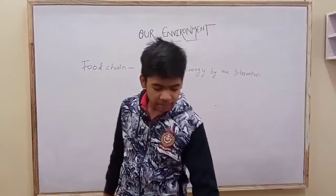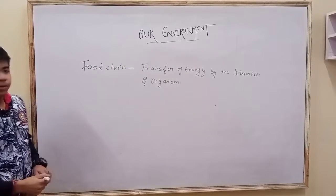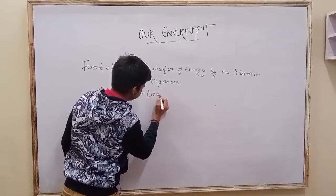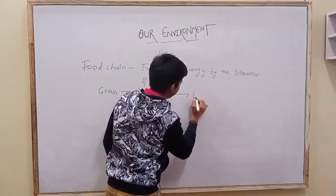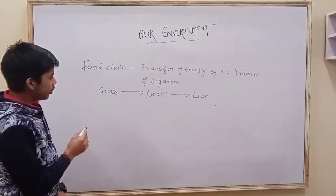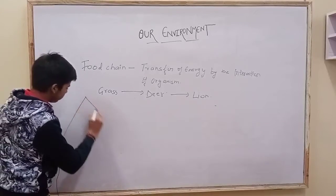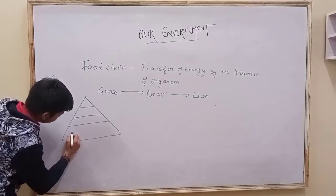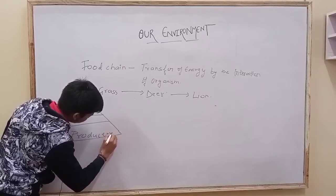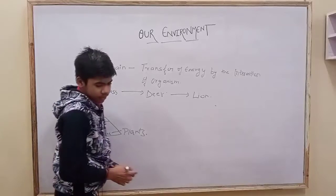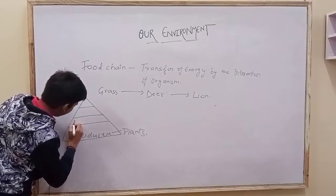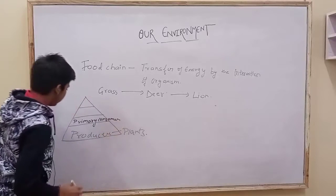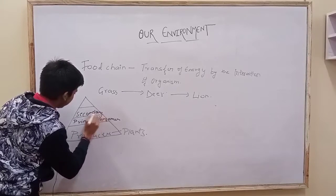In a food chain, organisms eat another organism and transfer their energy. For instance, grass is eaten by the deer, and deer will be eaten by the lion. In a food chain there are trophic levels — it consists of four trophic levels: first is producers like plants, then primary consumers, secondary consumers, and tertiary consumers.